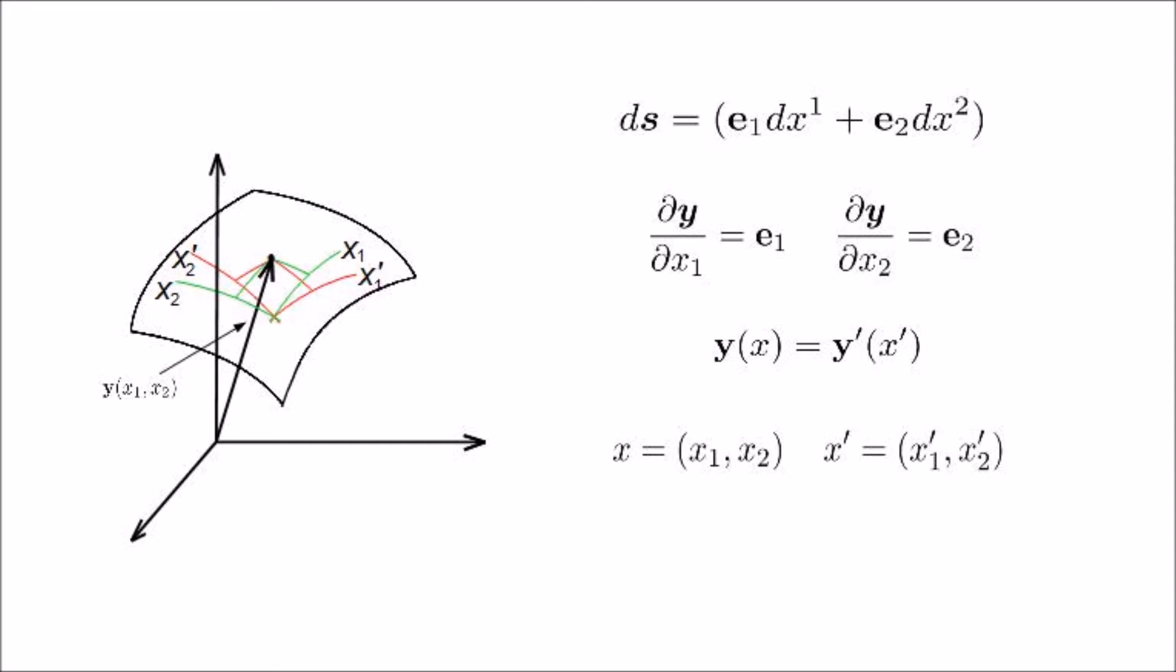Since the coordinate system x and x' are equally valid, there must be a one-to-one correspondence between them. In other words, x can be written as a function of x' and vice versa.